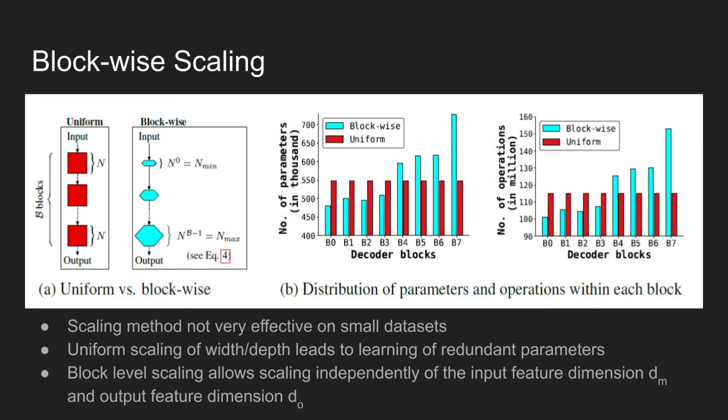Standard methods improve the performance of sequence models either by increasing the model dimensions or stacking more blocks. However, this scaling method is not very effective on small datasets and uniformly scaling the model width and depth leads to learning of redundant parameters. To solve this problem, the authors scale DeLighT blocks at the block level.